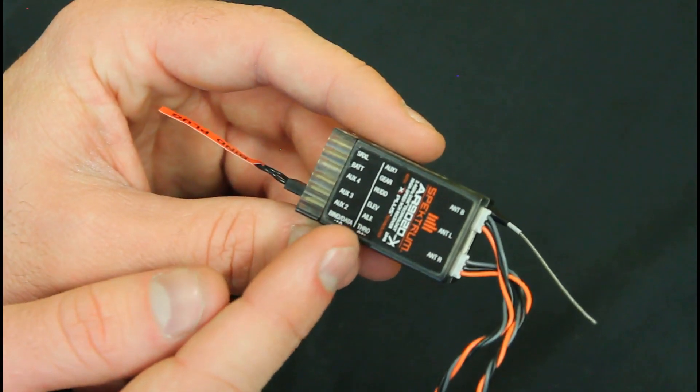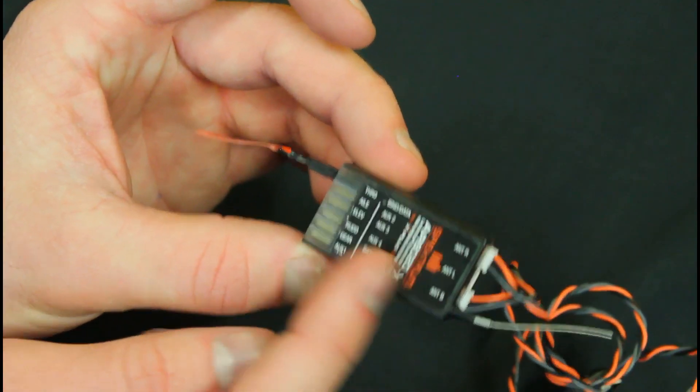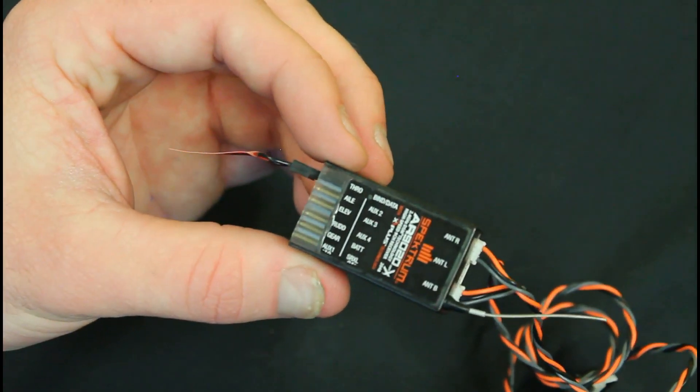Okay, the AR9020, you'll notice that there is a label on this side of the receiver and there is also a label on the other side of the receiver. So you'll notice that the bind data position has changed.